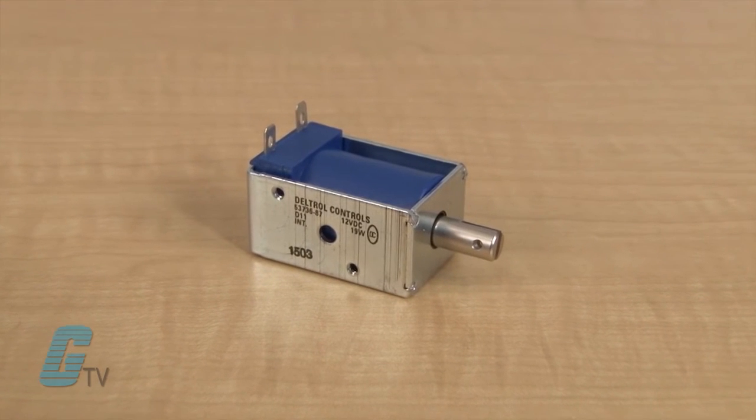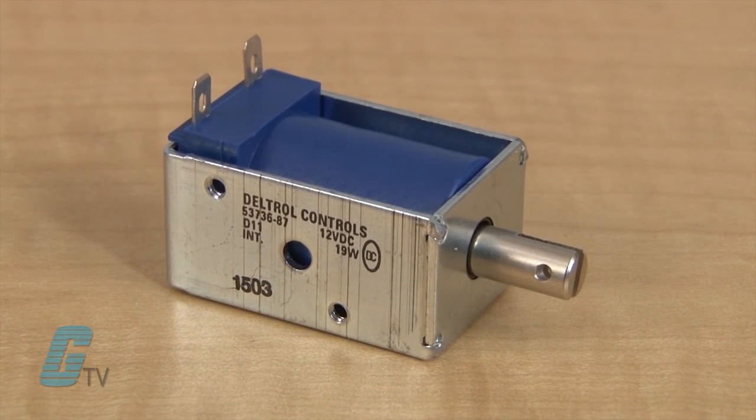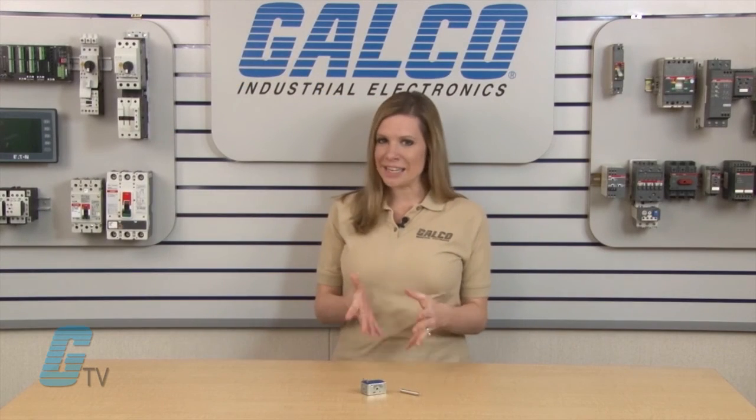The D11 series are UL E57982 approved for continuous duty and UL E74443 approved for insulated systems. For more information on Deltro's D-Frame D11 series of solenoids and thousands of other products and services, head over to Galco.com.